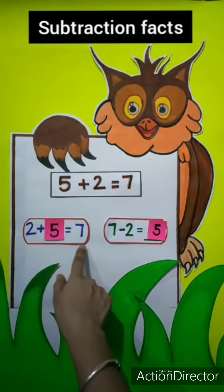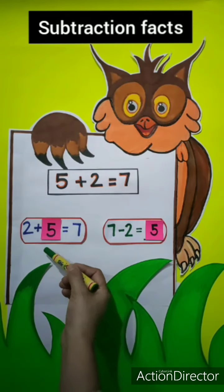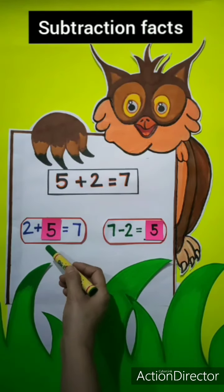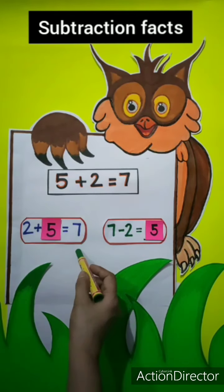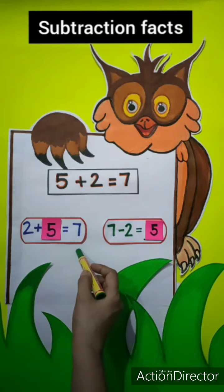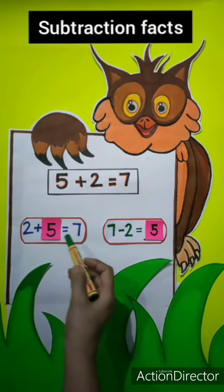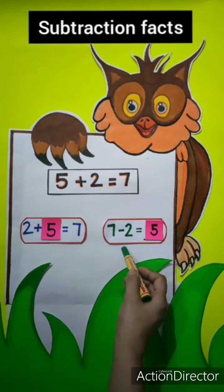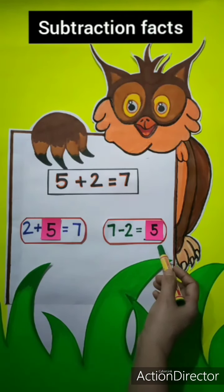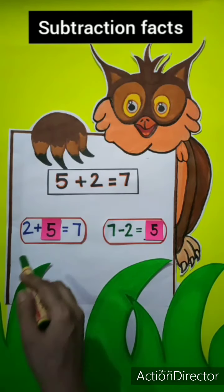So we will write 5 here also. 2 plus 5 is equals to 7, so this is the missing addend. To find the missing addend, we have to subtract the given addend from the sum. As we have done, 2 was given, and to find the missing addend we did 7 minus 2 and got 5. This means 5 is the missing addend.